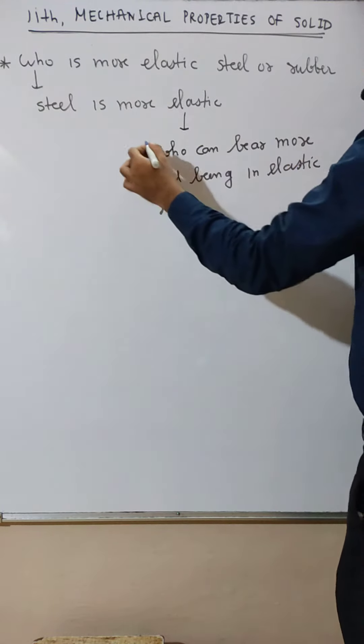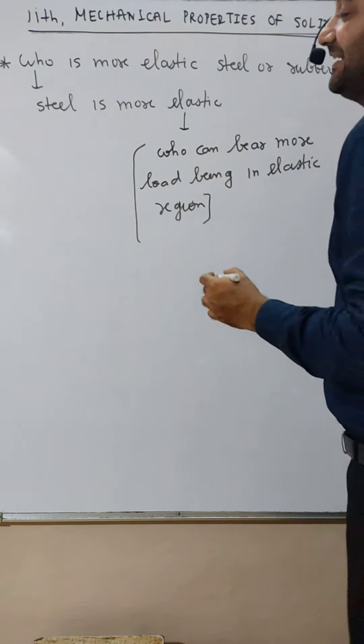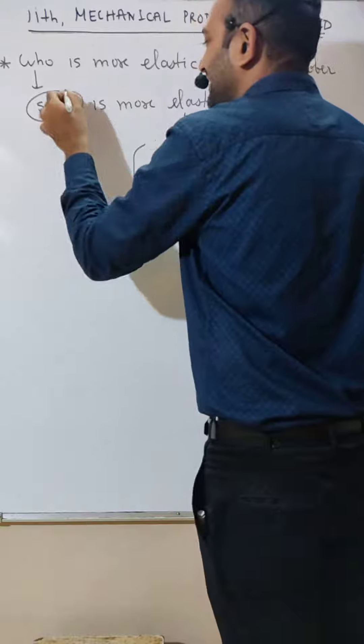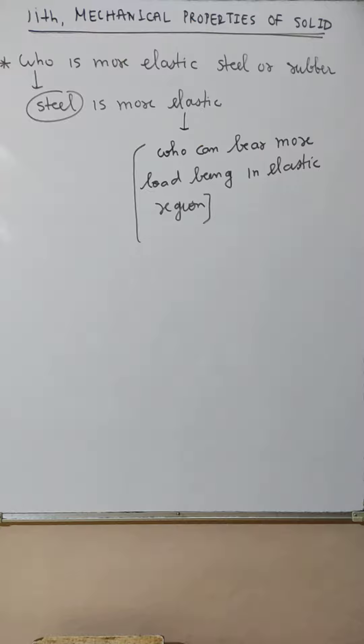So say rubber is more elastic? No, rubber is not elastic. Steel is elastic, steel is more elastic compared to rubber.